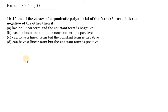Hello everyone, let's start with question number 10. If one of the zeros of a quadratic polynomial of the form x square plus ax plus b is the negative of the other, then it...